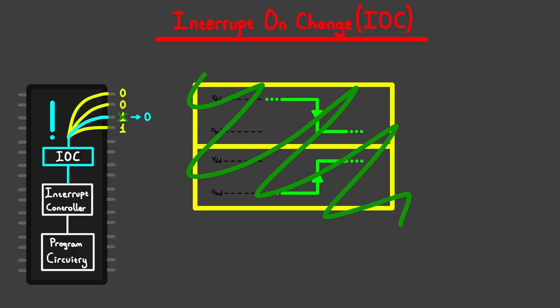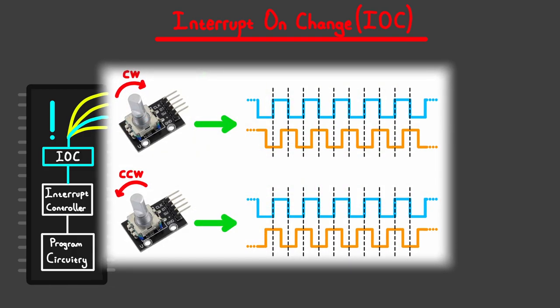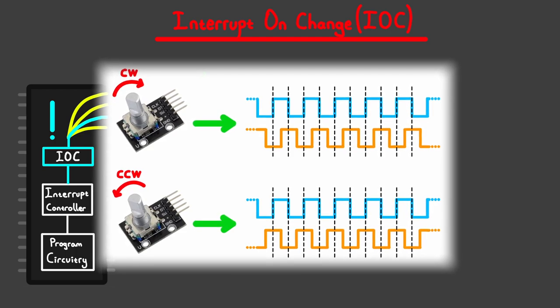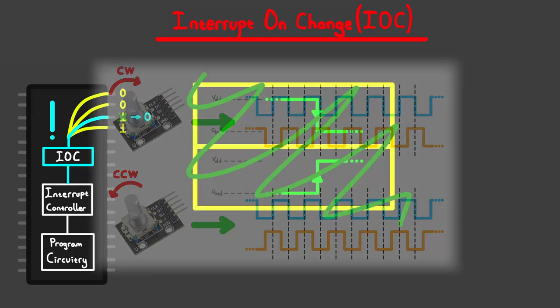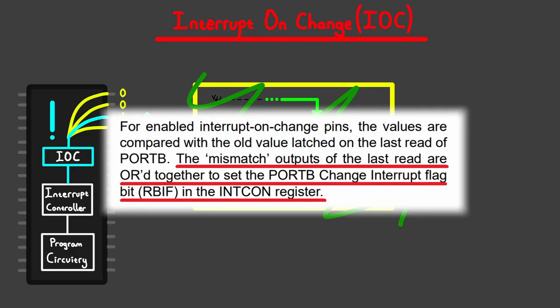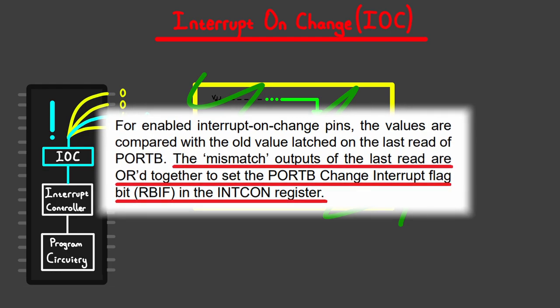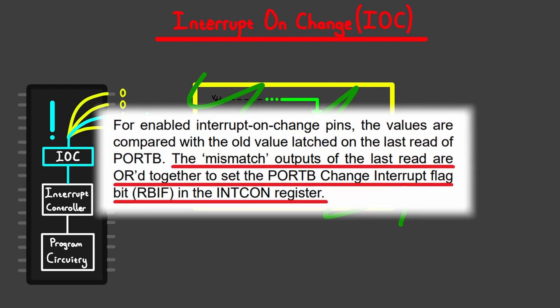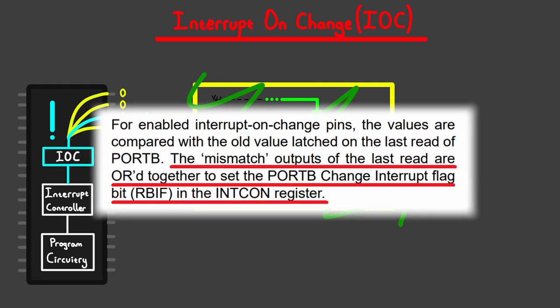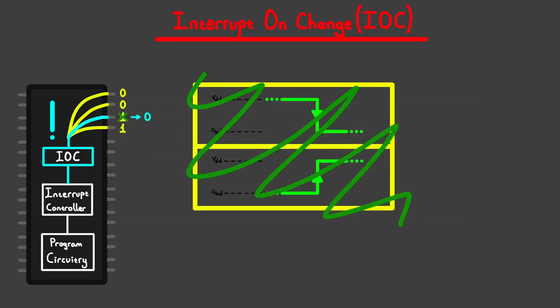This property of detecting both transitions makes this interrupt useful in reading things like encoders, where both transitions are important — so depending on the situation, it can be considered a feature. Also note that any state change of any pin configured as IOC will cause the same interrupt, so the pins don't have individual interrupt flags. They share the same one interrupt flag, so even if only one pin changes state, the same interrupt will occur. It's up to you to determine which pin's state changed in software, by reading and comparing them throughout your code.